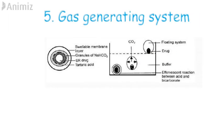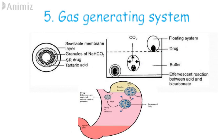The fifth and last type is the gas generating system. This consists of a sustained release drug core surrounded by a layer of sodium bicarbonate and tartaric acid, and an outer layer of a soluble membrane. Upon administration, an effervescent reaction takes place between the carbonate and tartaric acid to liberate CO2, which gets entrapped in the gelified layer of the membrane, helping it to float over the gastric content.